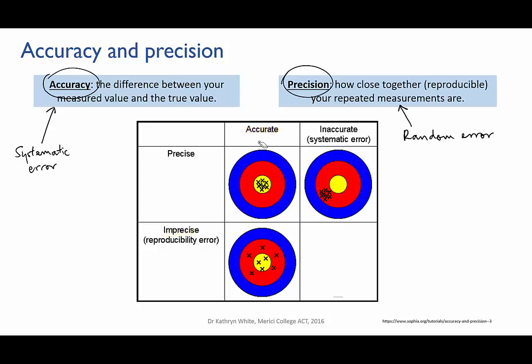The fourth box shows low precision and low accuracy. The shots are scattered, so they're not very precise, and if you averaged them, they would not be near the bullseye. This suggests perhaps an inexperienced archer shooting in a steady wind. The archer's lack of experience produces the random error, and the wind contributes an additional systematic error.